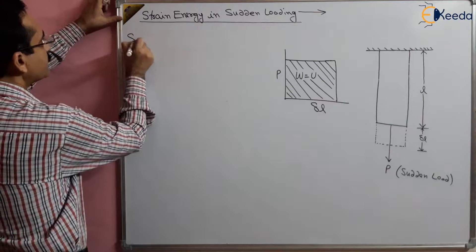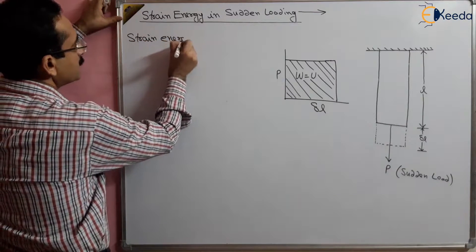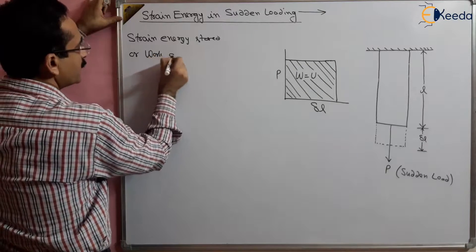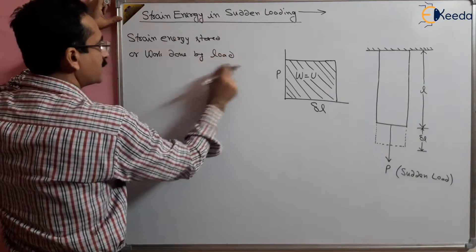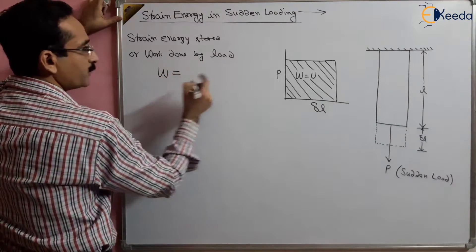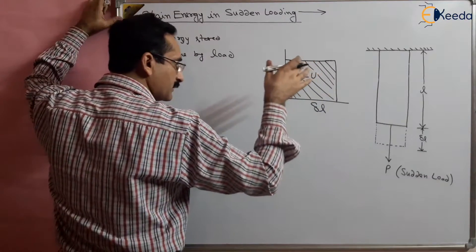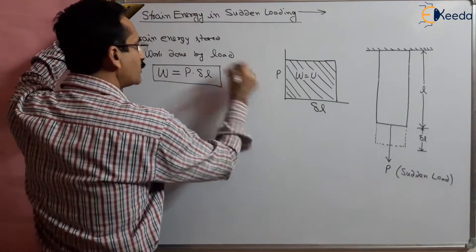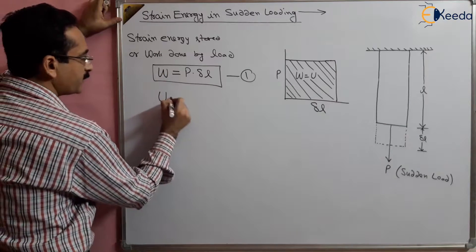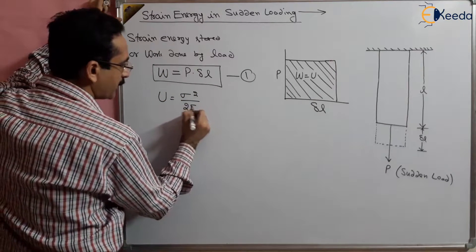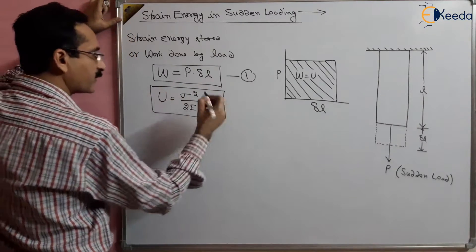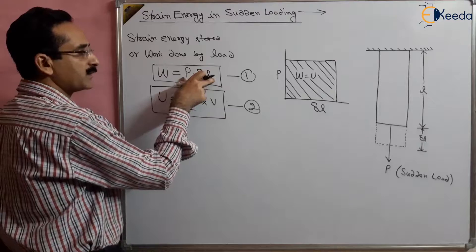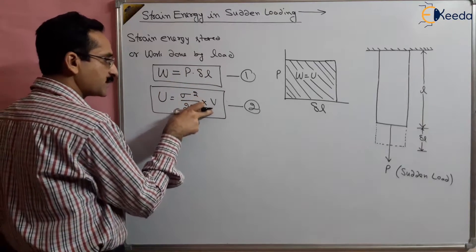What is the strain energy stored in the material? The work done by the suddenly applied load is equal to load multiplied by deflection, because the load is the same throughout the deflection. That is P times delta L. We also know the strain energy stored is given by sigma squared upon 2E multiplied by the volume — this equation is valid for every type of stress.